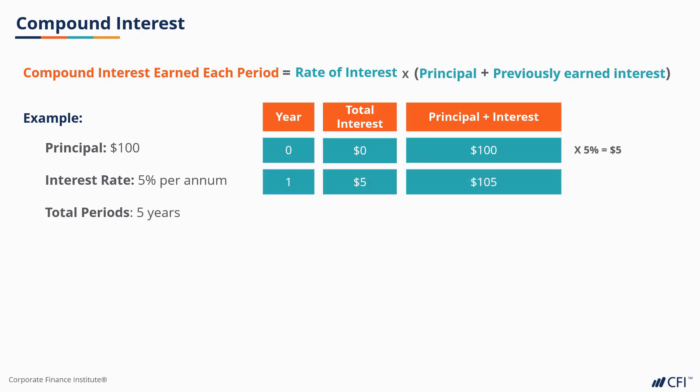At year 2, you would receive another $5 interest, but the $5 from the end of year 1 would also earn 5% interest, making that worth $5.25. Your total amount earned at the end of year 2 would be $10.25.